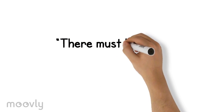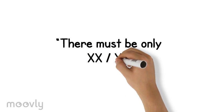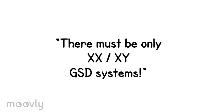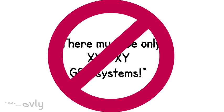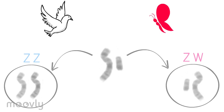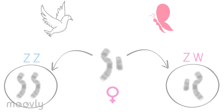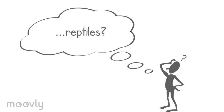That's not to say that the XY system is the only form of genotypic sex determination. Birds, snakes, and butterflies have a ZW system in which the female is the heterogametic sex. But where does that leave reptiles?